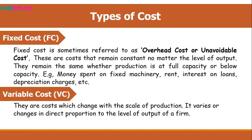The first type is fixed cost, sometimes referred to as overhead costs or unavoidable costs. These are costs that remain constant no matter the level of output of a given firm — they remain the same whether production is at full capacity or below capacity. Examples of fixed costs are money spent on rent, fees, machinery, interest on loans, and depreciation charges.